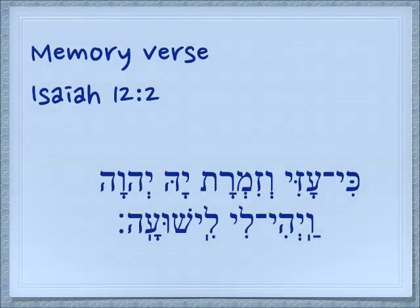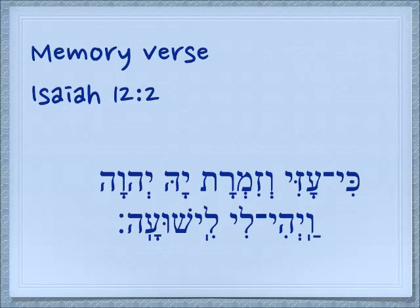Here's our memory verse. This verse appears in three places — we looked at Exodus, now we're in Isaiah 12:2. I'll read it through, then slowly word by word with translation, then through again. Ki Ozi Vizimrat Ya Yehovah Vayihi Li Lishua. Ki — because; Ozi — my strength; Vizimrat — the song of; Ya Yehovah; Vayihi — and it becomes; Li — to me; Lishua — my salvation.